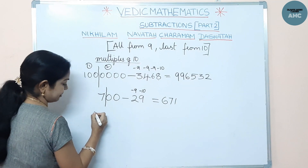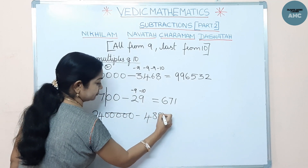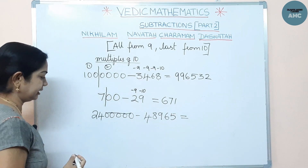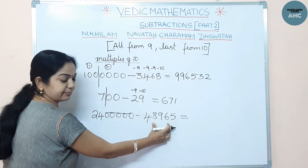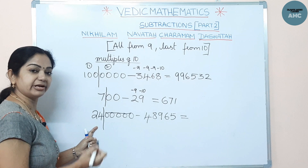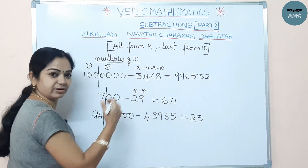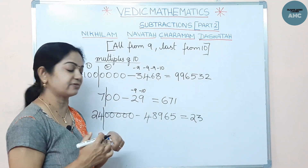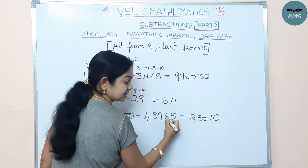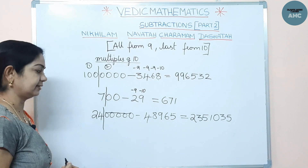Another example: 2,400,000 minus a 5-digit subtrahend. Since the subtrahend has five digits, make a partition after five digits from the right. The first part is reduced by one: 24 becomes 23. Apply the sutra to the five-digit part: 9-4=5, 9-8=1, 9-9=0, 9-6=3, 10-5=5. The answer is 23 | 51035.